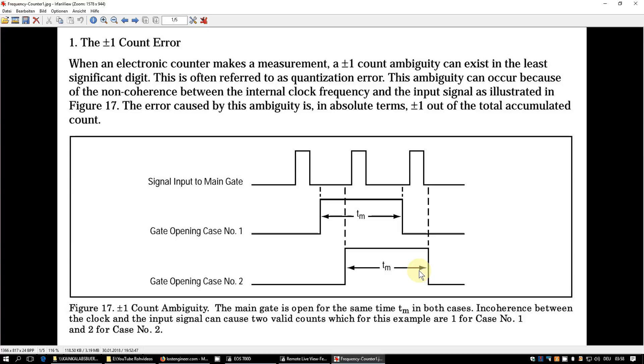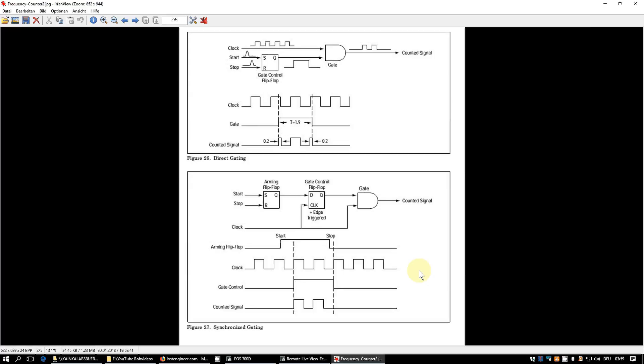But there's a remedy for this. And this is what is called an additional arming flip-flop. I won't explain it here. Just read the very good explanation in the application note. So, if you have synchronized gating by the means of an extra arming flop, then we get a stable display. So, we get away with the jitter in the least significant digit, but we don't increase the resolution. So, only getting a stable display has no merit concerning increasing resolution.